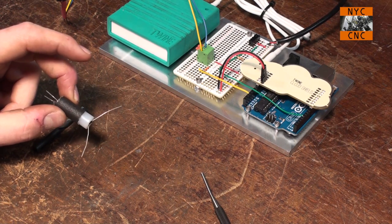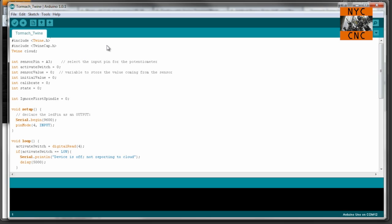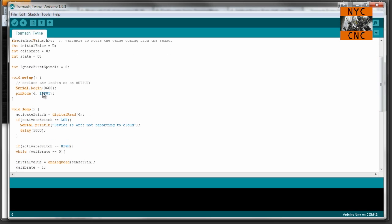Here is the Arduino code. I like to move pretty quickly through the code, but post a comment below or over on our Facebook page if you have questions—happy to answer them. You need to download and import the Twine library. We define Twine as cloud, analog 3 is our photo cell sensor, and we've got a bunch of variables and integers set up here.